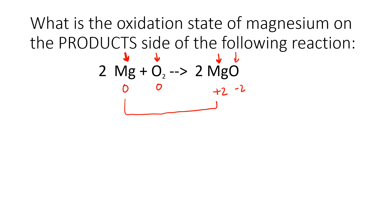So magnesium lost two electrons — what do we call the loss of electrons? Oxidation. And then oxygen — if one thing was oxidized, the other thing better be reduced. It went from zero to negative two, so it gained two electrons. This is reduced. The charge on O₂ on the left is zero because anything in its elemental state has a zero oxidation state.